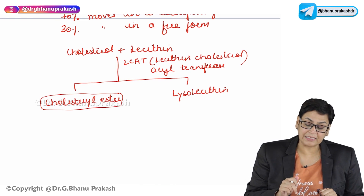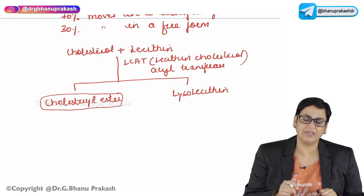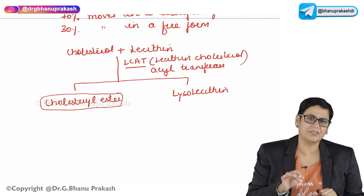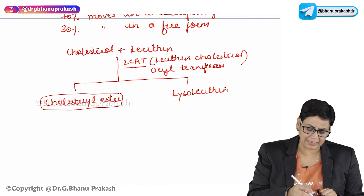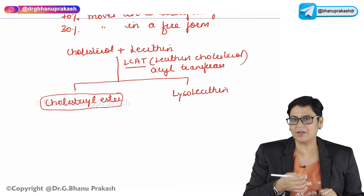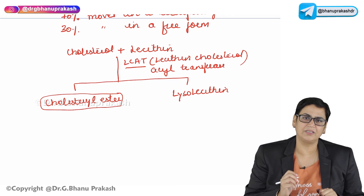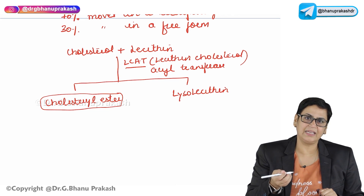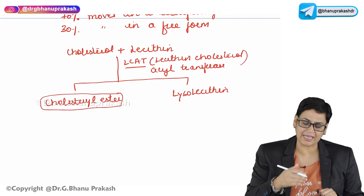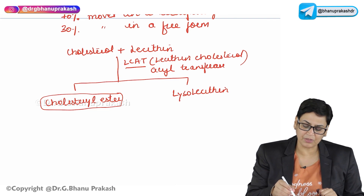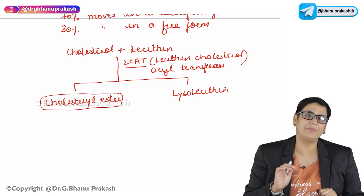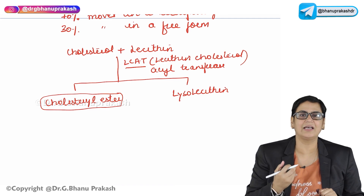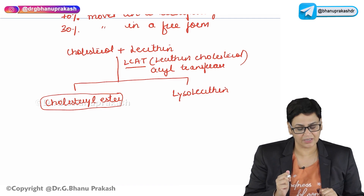The clinical significance of this enzyme is very important. LCAT is present in the plasma as well as in the tissues. It is also known as ACAT, which is acyl-coenzyme A cholesterol acyltransferase, depending on its occurrence — whether it is in the plasma or in the tissues.